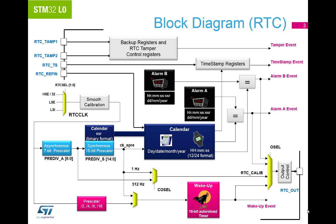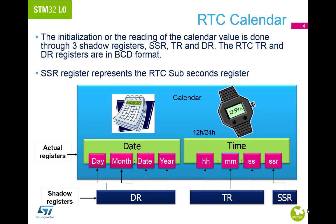When clocked by LSE (low speed external), the RTC clock is not stopped and remains active under system reset, again except for power on reset. The calendar in the RTC is expressed in binary coded decimal format with a sub-second register. Access to these values is done via free shadow registers.